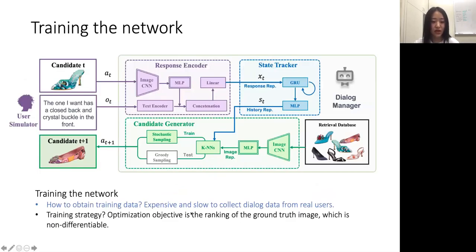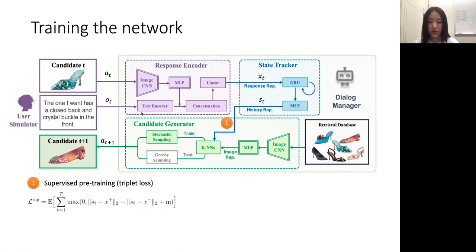Now we described how we can use the user simulator to represent the user and train the dialogue manager. So how do we actually train the network? We actually follow a two-stage training. First, we use supervised pre-training, which can provide a good initialization of the model, and then followed by reinforcement learning, which can directly optimize the ranking objective. For supervised pre-training, we have the history representation ST, and also for training, we have the ground truth image, which is the target image feature. We also randomly sample an image feature from the database. We want to train the network parameter so that the estimated history representation can become closer and closer to the target feature.